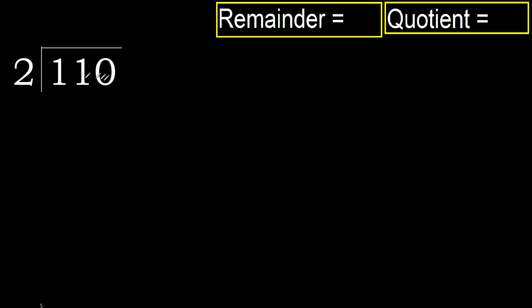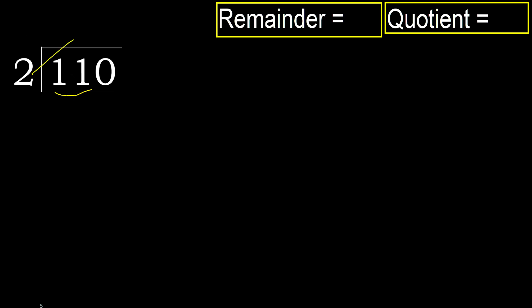110 divided by 2. 1 is less, therefore next. 11 is not less, therefore with 11. 2 multiplied by which number is nearest to 11, but not greater?